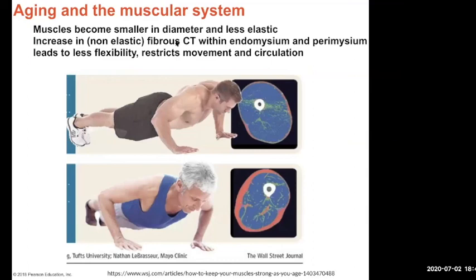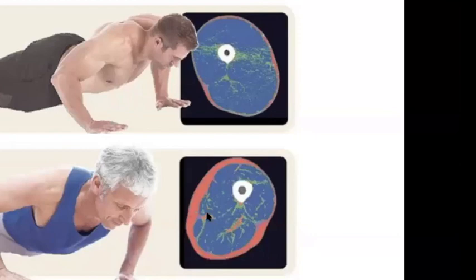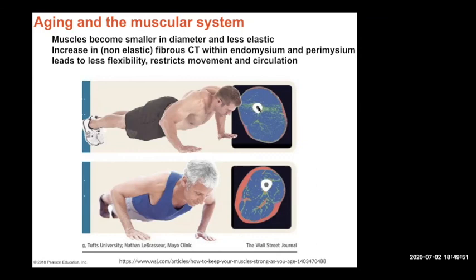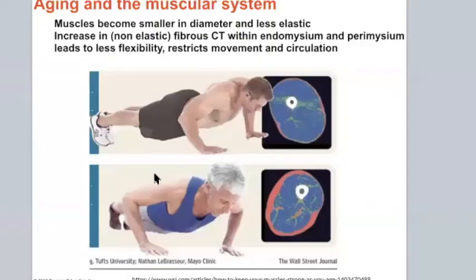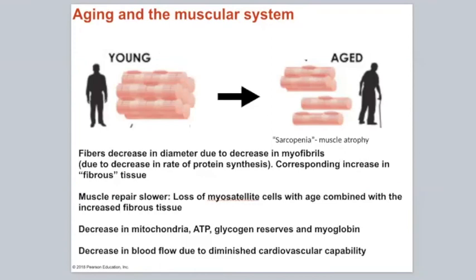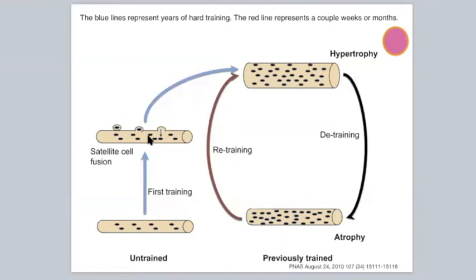Overall, your muscles become smaller and less elastic. A 70-year-old may look okay from the outside, but if you did an MRI of his muscle you'd see a lot more connective tissue — fibrous connective tissue and fat instead of muscle. That fibrous connective tissue is often a result of repair attempts, and it leads to less elasticity, less flexibility, restricting movement and circulation. These are some of the bullet points that might be asked for aging and the muscular system.